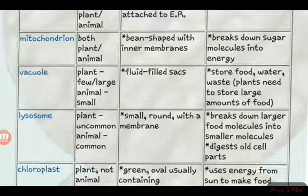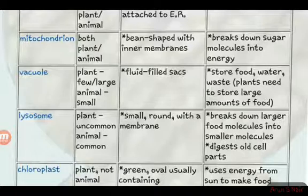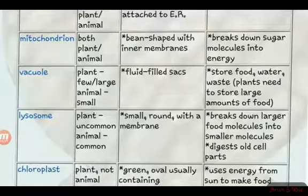This is the chloroplast. It is green and oval in shape. Chloroplast uses the energy from the sun to make food. The plant absorbs energy through the chloroplast and converts it into food through photosynthesis.